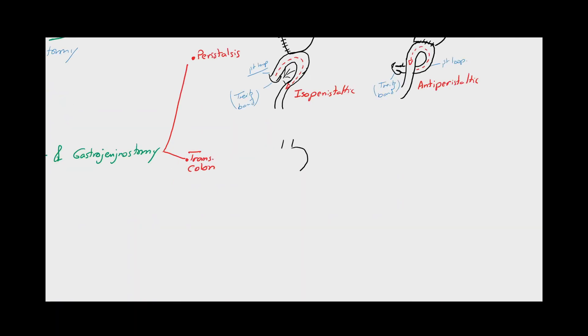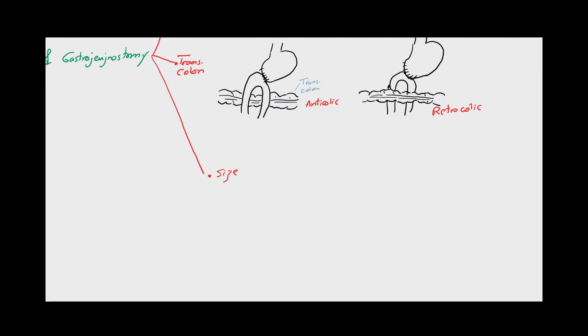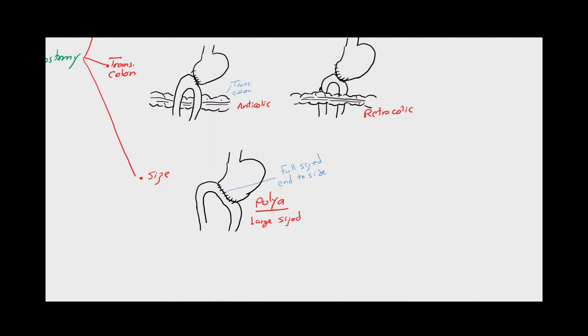Another classification depends on the position of the jejunal loop against the transverse colon. When it passes in front of the transverse colon, it's called antecolic gastrojejunostomy, but when the jejunal loop passes behind the transverse colon through the mesocolon, it's called retrocolic gastrojejunostomy. According to the size of the stoma, a large stoma covering the whole length of the resection margin of the stomach is called a Polya anastomosis, while a smaller size stoma, about three fingers wide, is called a Hoffmeister anastomosis.